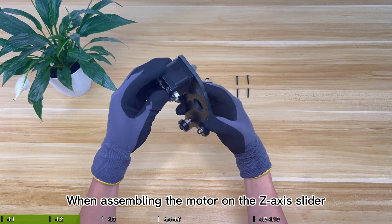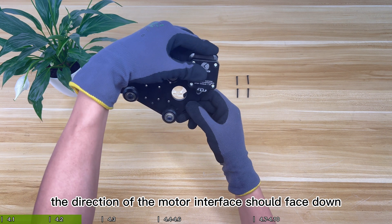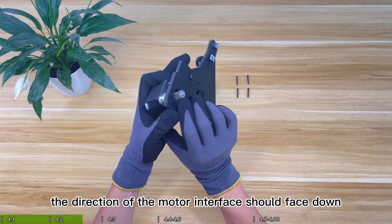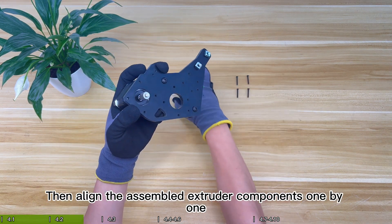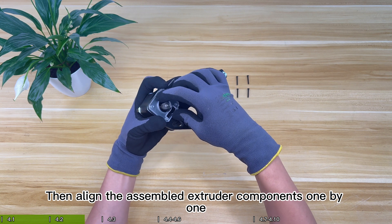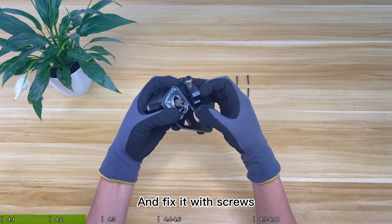When assembling the motor on the Z-axis slider, the direction of the motor interface should face down. Then align the assembled extruder components one by one and fix it with screws.